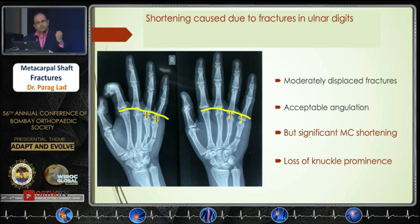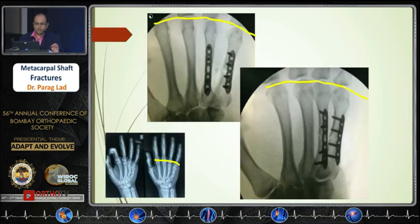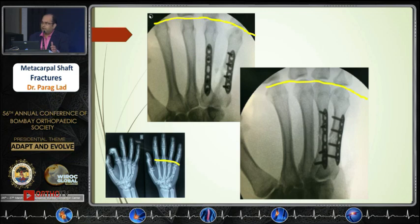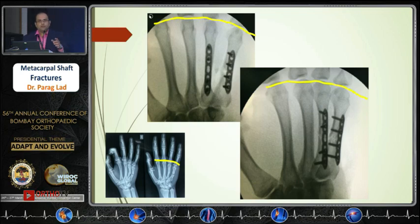When they make a complete fist, loss of knuckle prominence is a major issue for proper hand function. To correct the shortening and achieve proper length, they need stable fixation. This can be fixed with a plate, but another technique is stacking multiple small wires. You need adequate length of the metacarpal, especially on the ulnar digit.